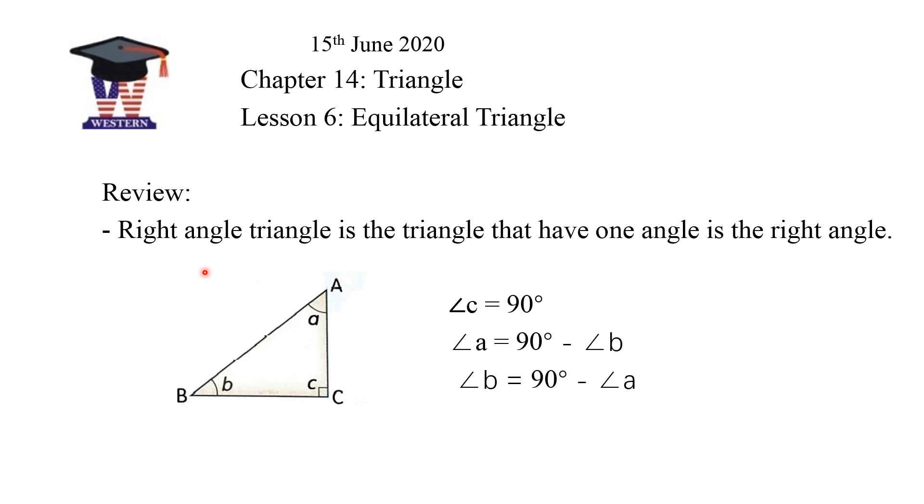I'll review the previous lesson that you learned last week about right angle triangles. In a right angle triangle, it's the triangle that has one angle that is a right angle. Like the picture I show you here, angle C is the right angle, and the right angle is equal to 90 degrees.